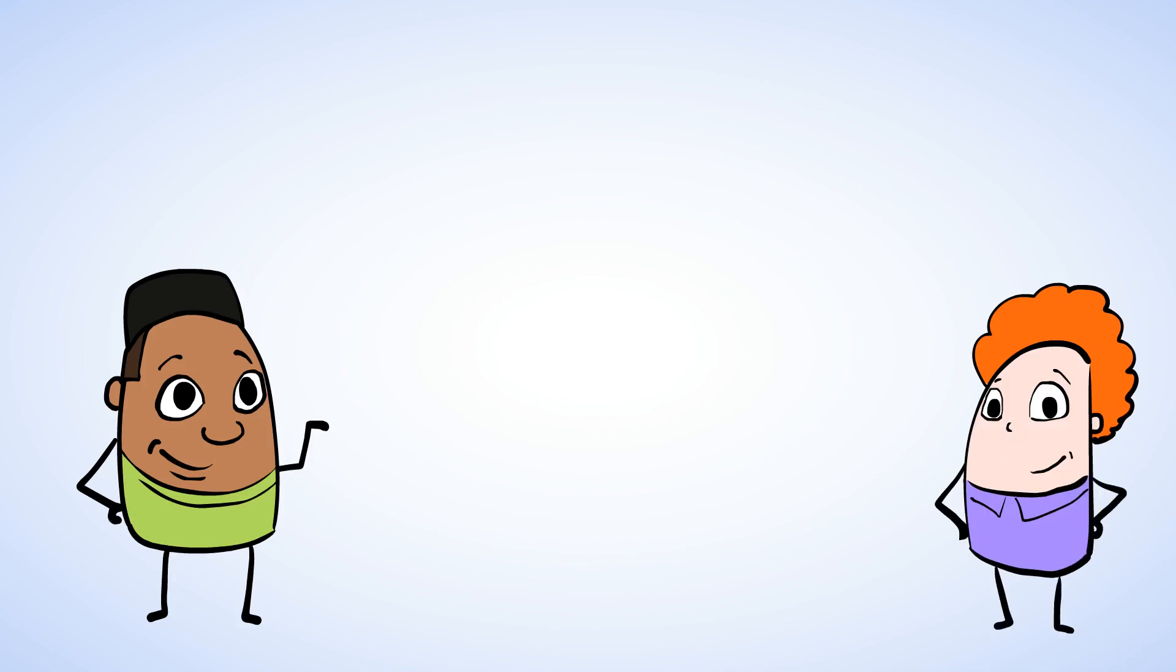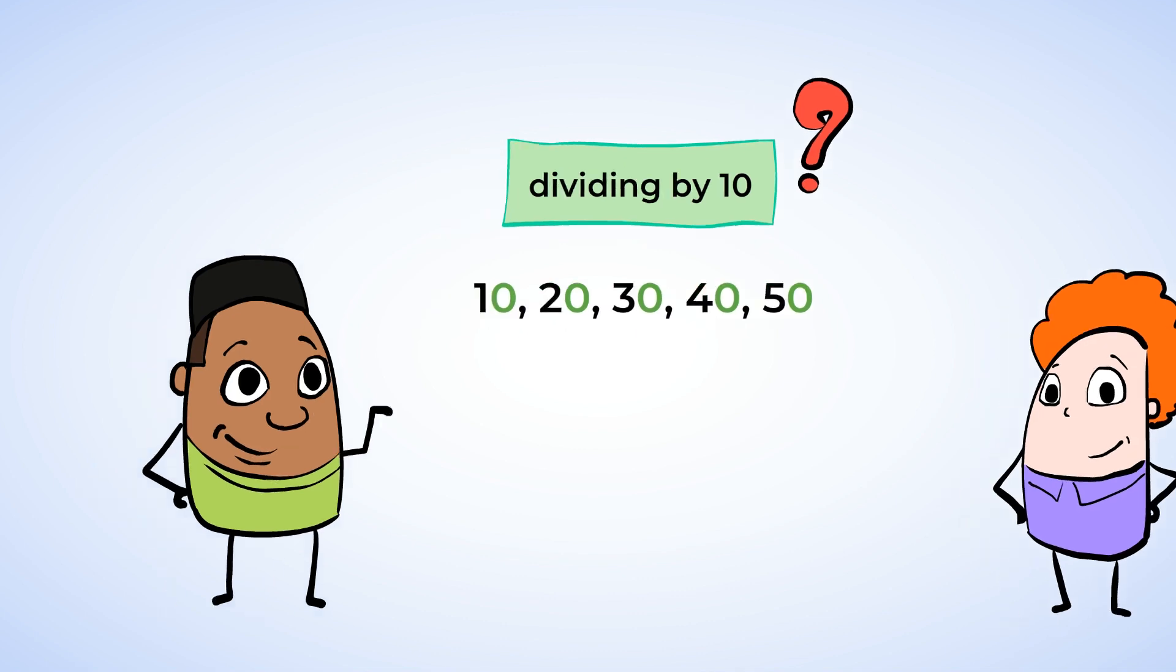And the last divisibility rule? How to understand if a number can be divided by 10. Let's start by counting by 10s to see if we can spot a pattern. 10, 20, 30, 40, 50. When you look at that, all the numbers end in a 0.